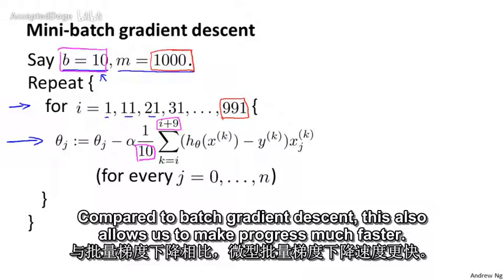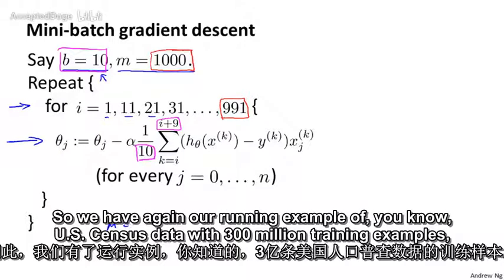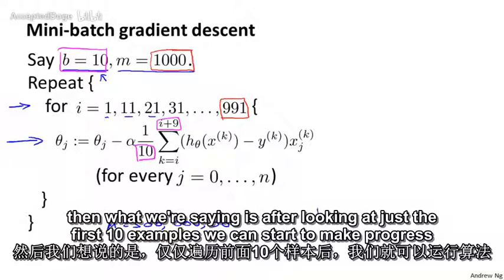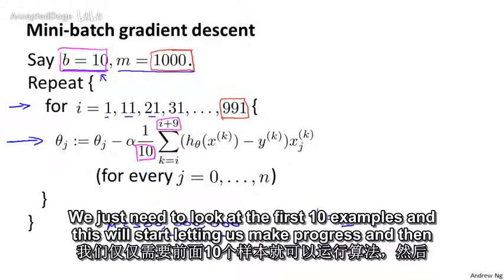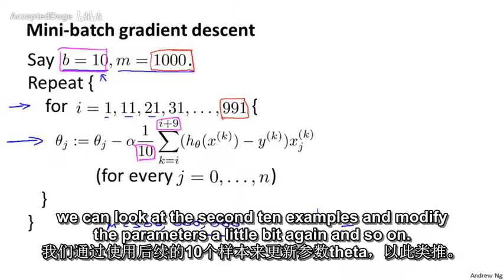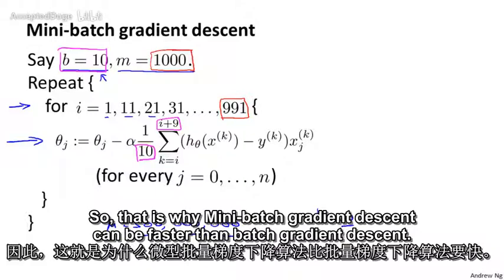Compared to batch gradient descent, this also allows us to make progress much faster. So we have, again, our running example of US census data with 300 million training examples. Then what we're saying is after looking at just the first 10 examples, we can start to make progress in improving the parameters theta. So we don't need to scan through the entire training set. We just need to look at the first 10 examples and this will start letting us make progress. And then we can look at the second 10 examples and modify the parameters a little bit again and so on.